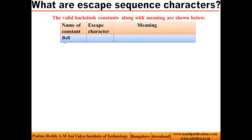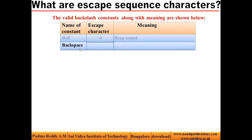Look at this constant: bell. It is denoted by \A. When printed using printf function, we get a beep sound. Look at the next constant: backspace. It is denoted by \B. When this is printed using printf function, the cursor moves towards left by one position.